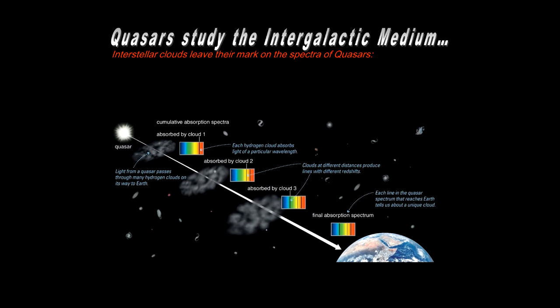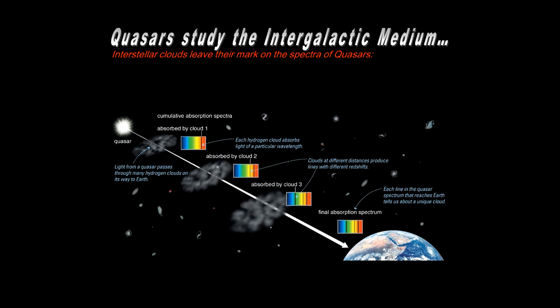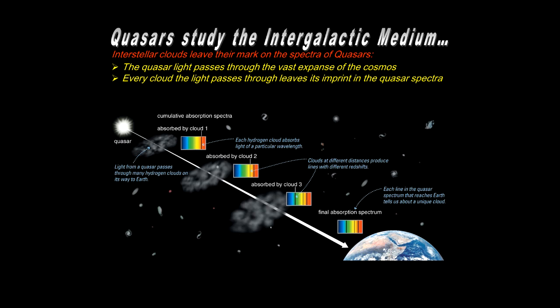Now even though the quasars themselves are a little bit hard to study, when we find them, we can investigate the imprint they make on the clouds that the light passes through. So we can use the quasars to study the intergalactic medium in the intervening vast regions of space from the quasar to Earth. The light has to pass through the cosmos, and in so doing, there may be multiple clouds along the way, and each cloud leaves its own unique imprint in the spectra.